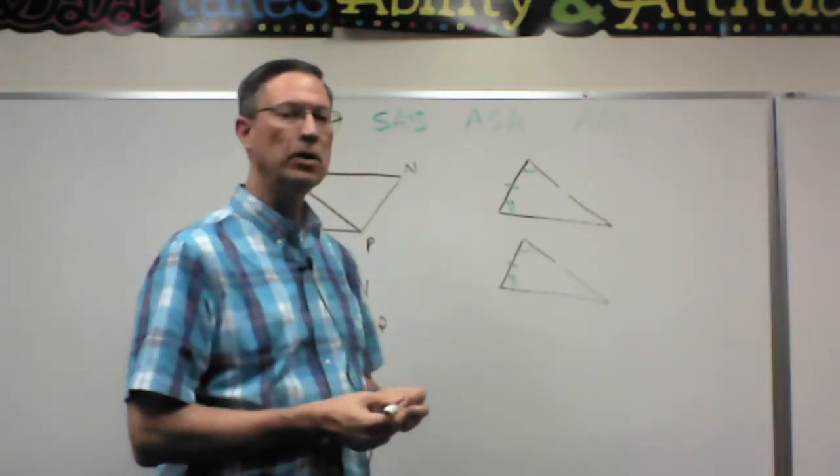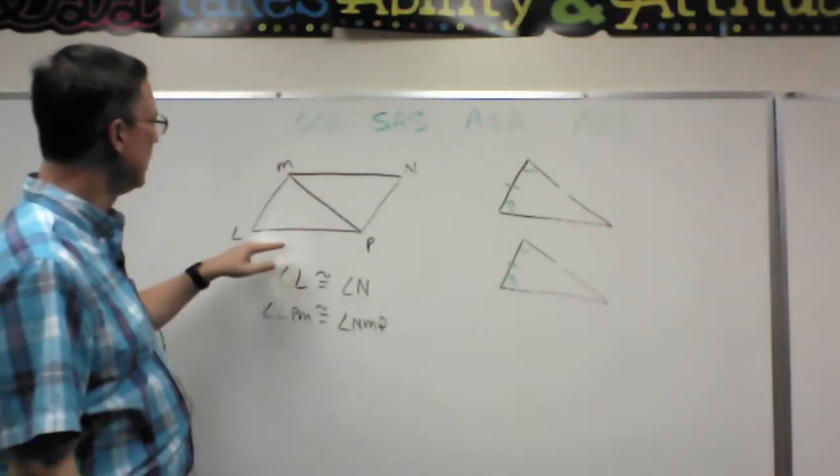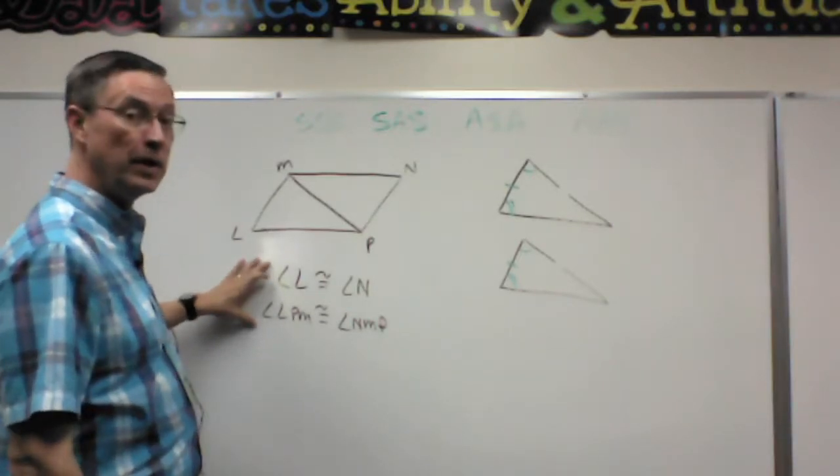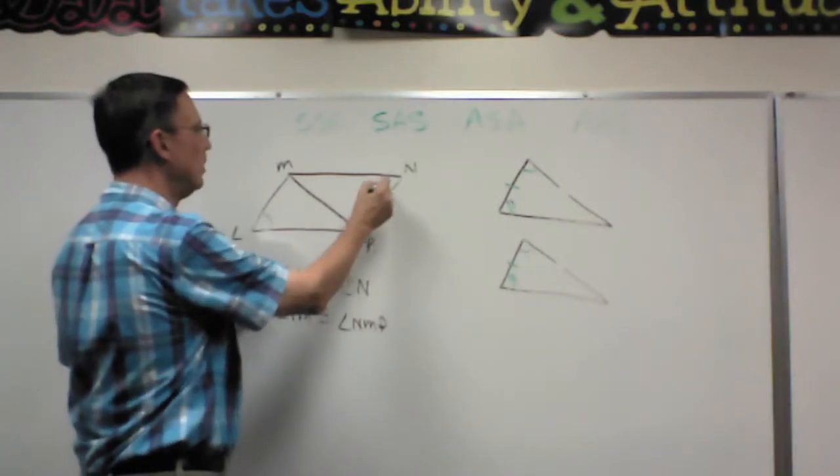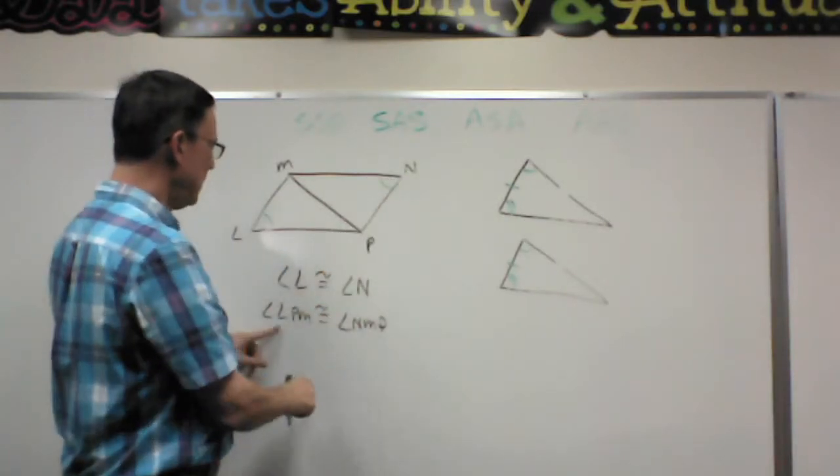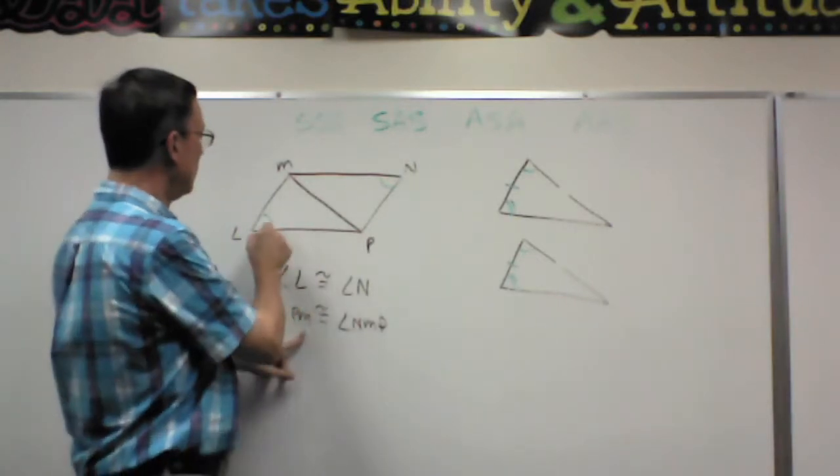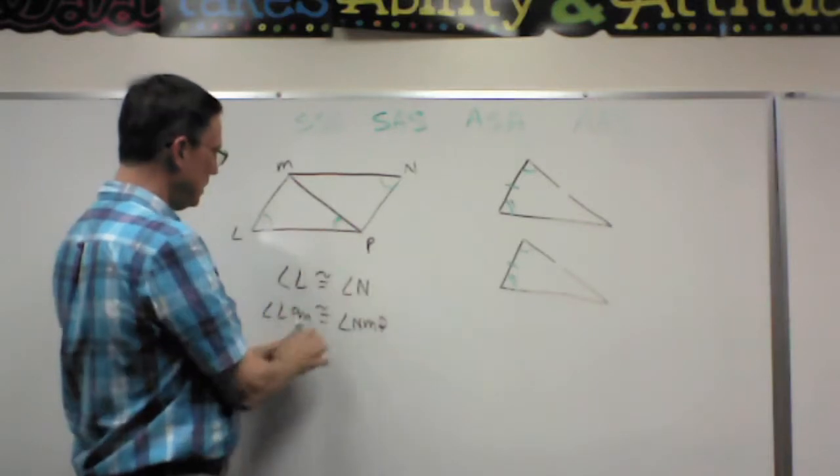All right, so that's wording it a little differently than what we've had. Let's look at this example right here. So this given part is telling me that angle L is congruent to angle N, so I'm going to mark L and N as being congruent. It also tells me that angle LPM, so LPM, so remember this is telling me that this has to be in the middle, angle LPM has to be congruent to NMP, NMP.